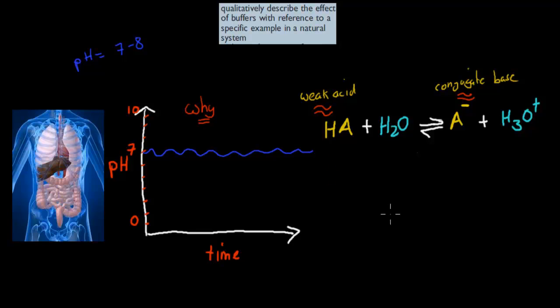But in the case of a buffer, initially we want to have equal concentrations. So we might want to have 2 here, and if we have 2 here of the weak acid, we'll also have 2 of the conjugate base.